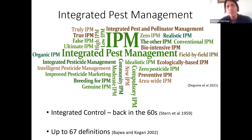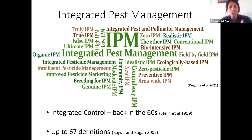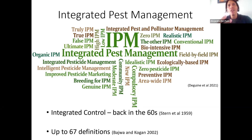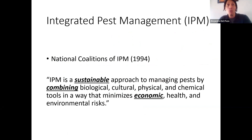IPM was conceived back in the sixties. Stern and other entomologists came to this idea about using IPM as an approach to deal with arthropods and pests. But up until today, we have 67 definitions of IPM. So there's cherry-picking — you can pick and choose. I'm going to pick the one I like the most, and that's a little biased because every one of us will have our own IPM definition.